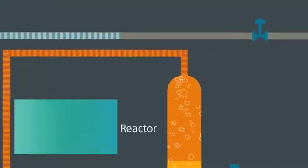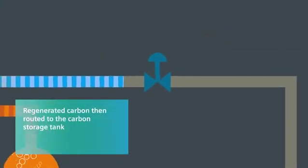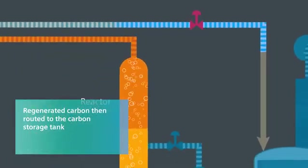The regenerated carbon passes through a pressure-reducing valve and is routed to the regenerated carbon storage tank.